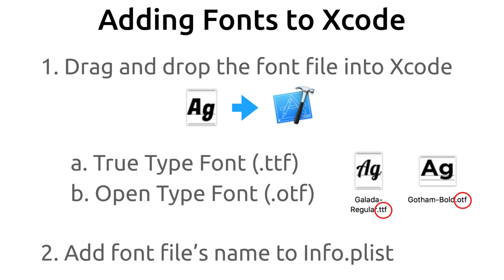Once you add the font to your project, Xcode will know about the new font and you can start using it through Interface Builder — the new font shows up in the font selection drop-down in your inspection pane. But don't be fooled — it's only Xcode that knows about the font. If you try to create the font in code it will not work. When it comes time to distribute your app, iOS will need to know about that font file to include it in the package and deploy it to the App Store. That's why we need to add the font file's name to your info.plist.